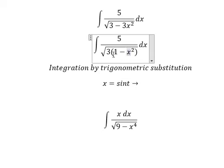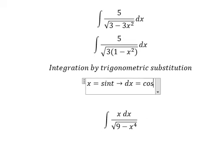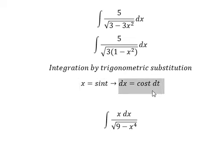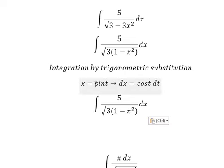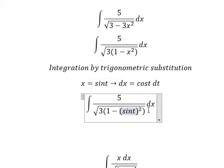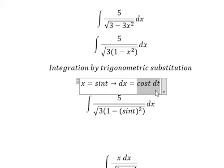Because if I put this in here, we have 1 minus sin²(t). 1 minus sin²(t) is equal to cos²(t). Later we simplify the square root. For dx, we need to do the first derivative for both sides.